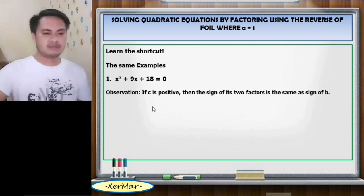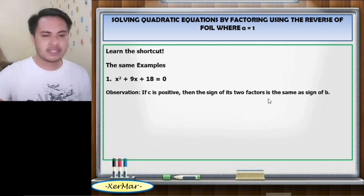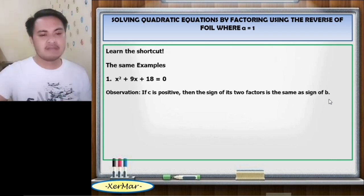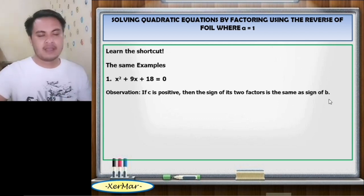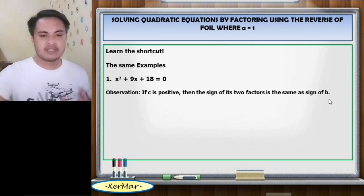Observation: If c is positive, then the sign of its two factors is the same as the sign of b. Meaning to say, if b is positive, then the sign of the two factors of c is positive. On the other hand, if b is negative, the sign of the two factors of c is negative.